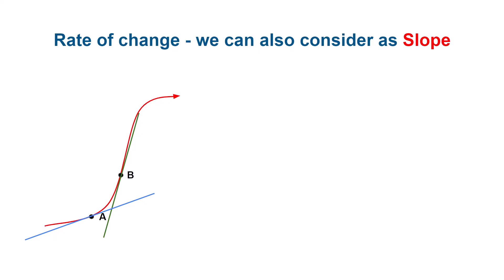So we can consider the rate of change also as the slope or better to say, steepness of the slope. We can conclude now the rate of change is higher at point B than at point A.